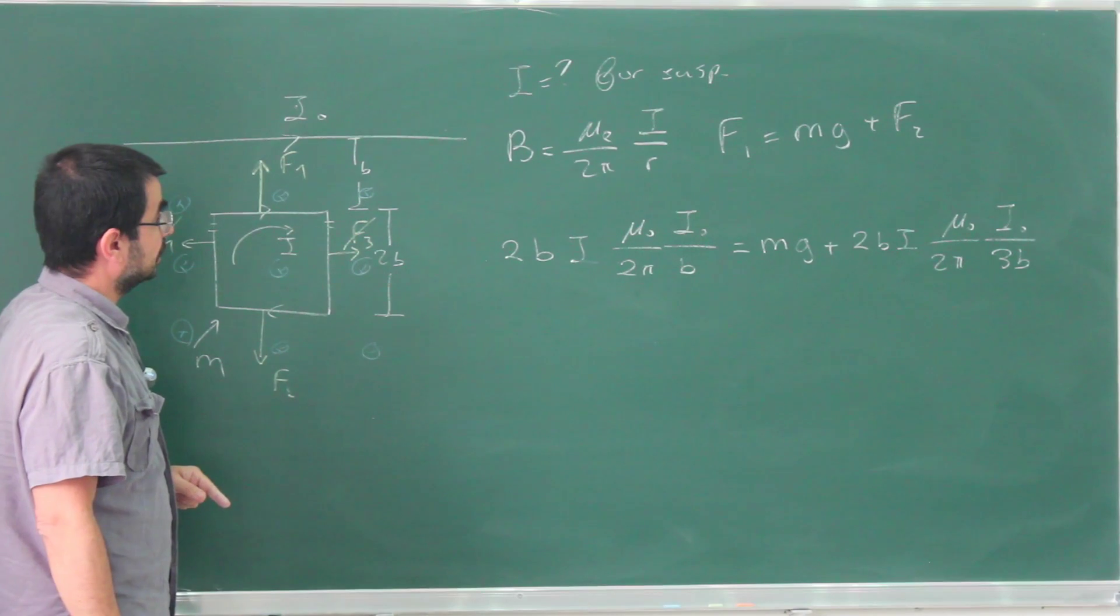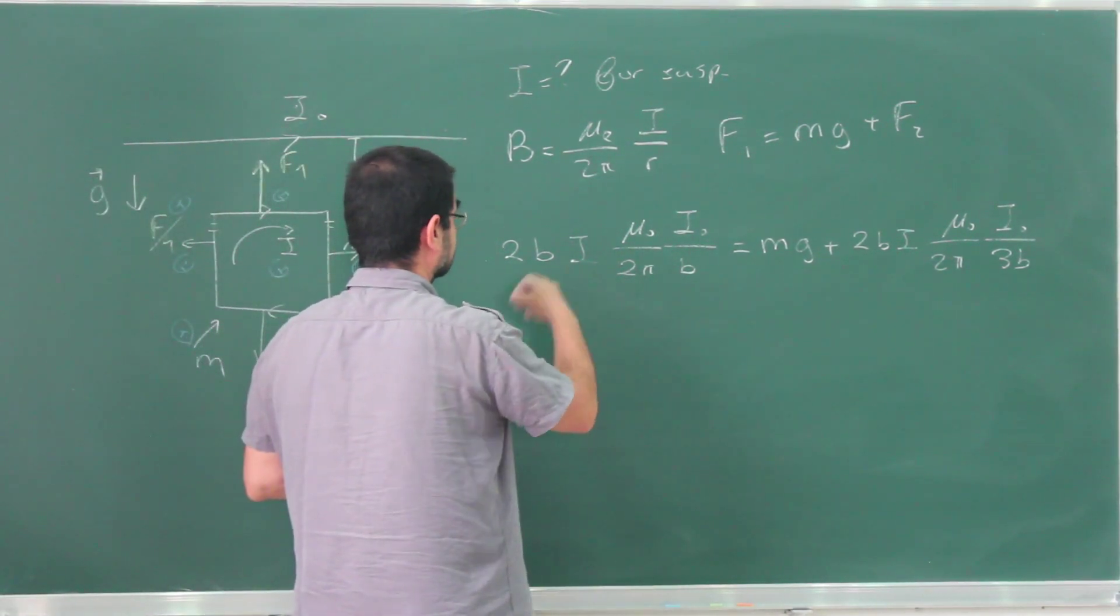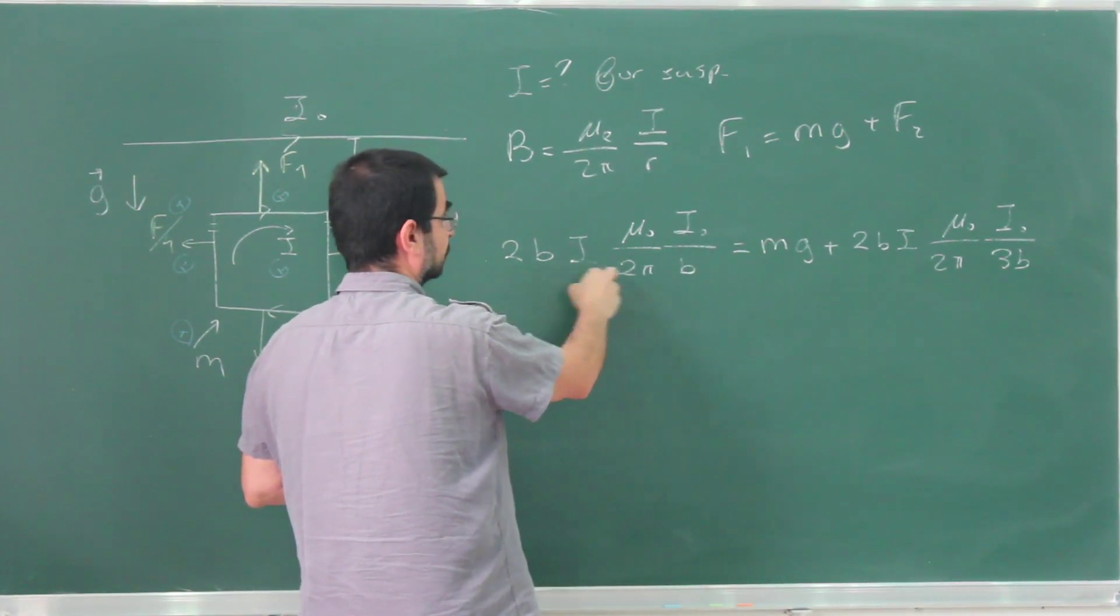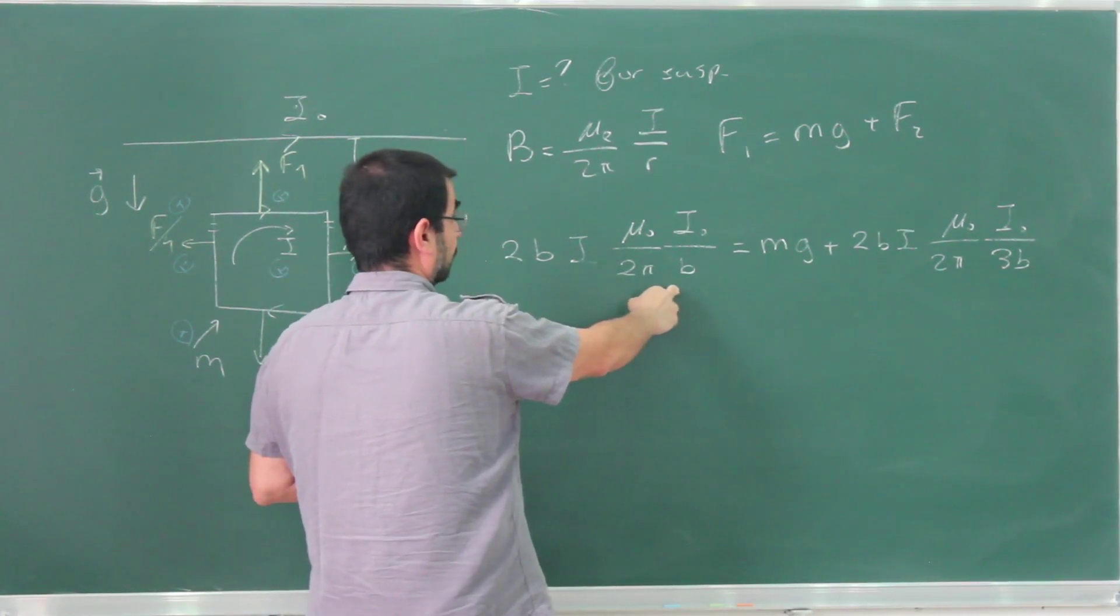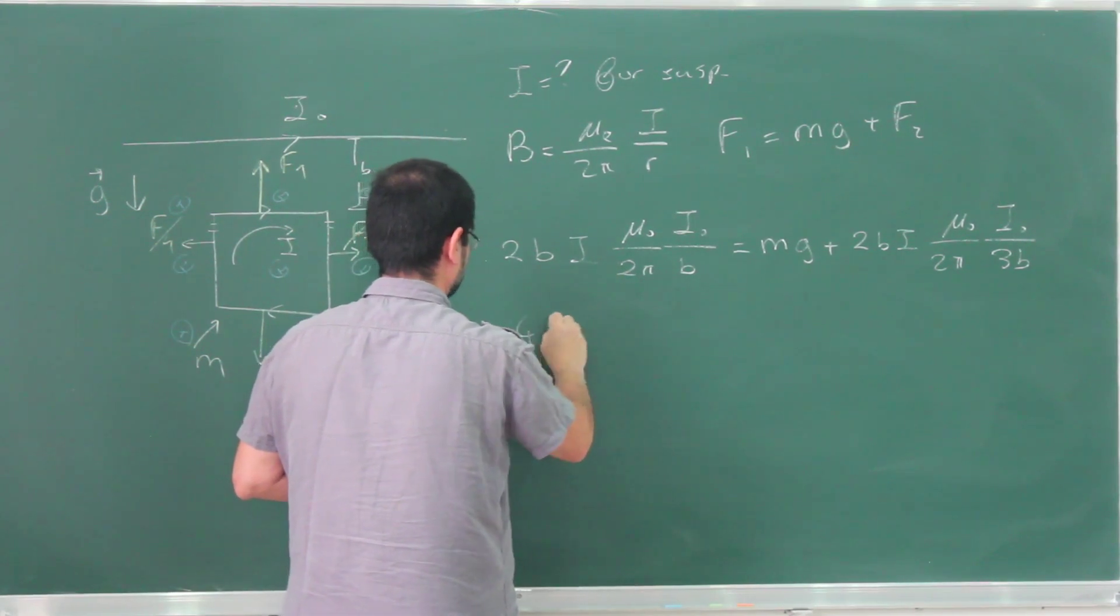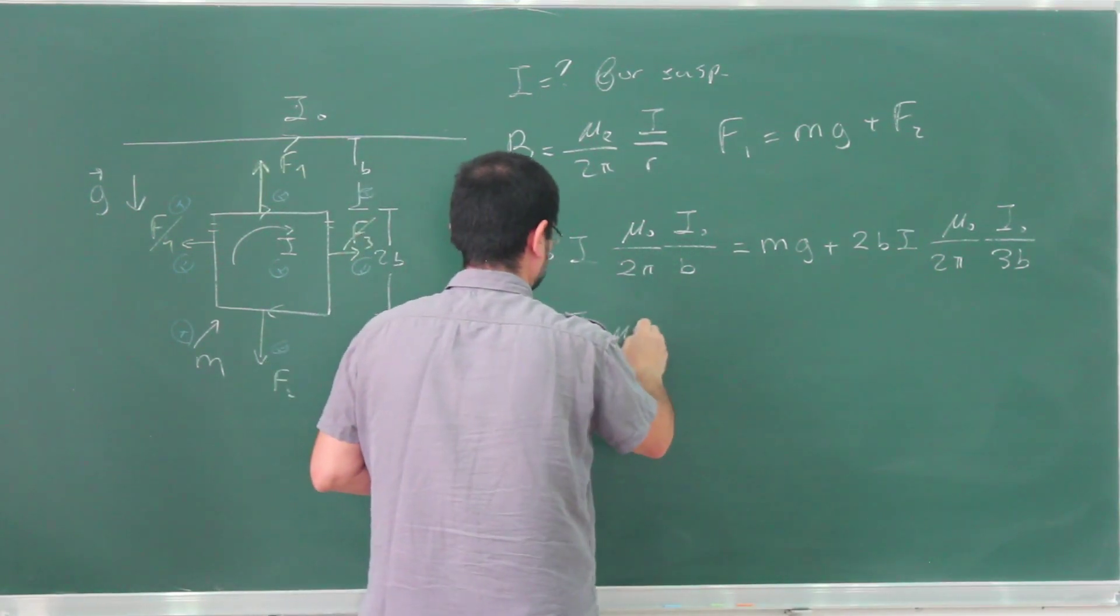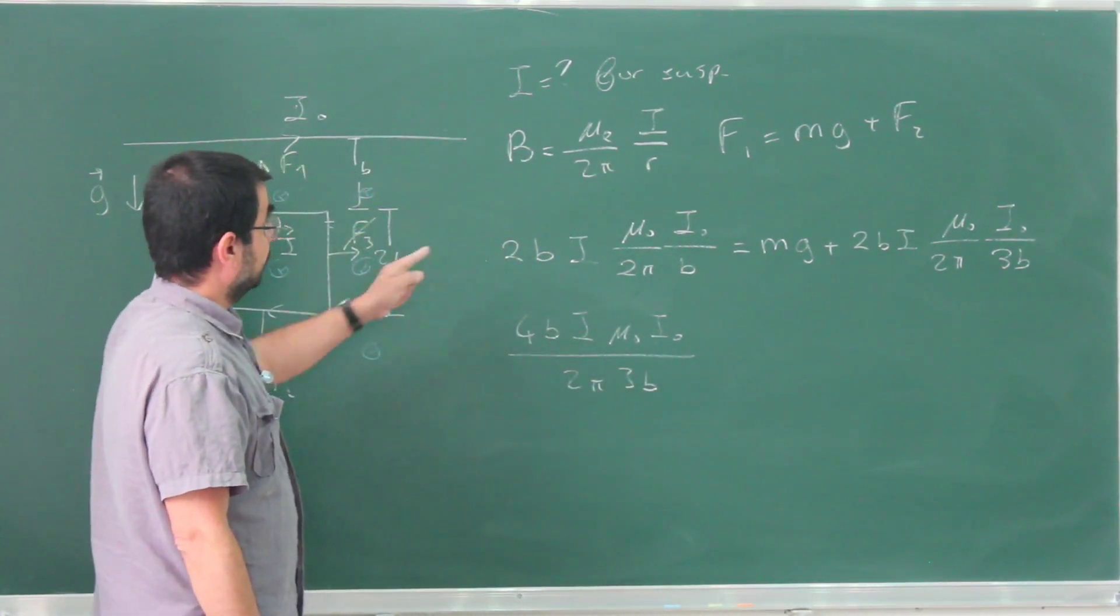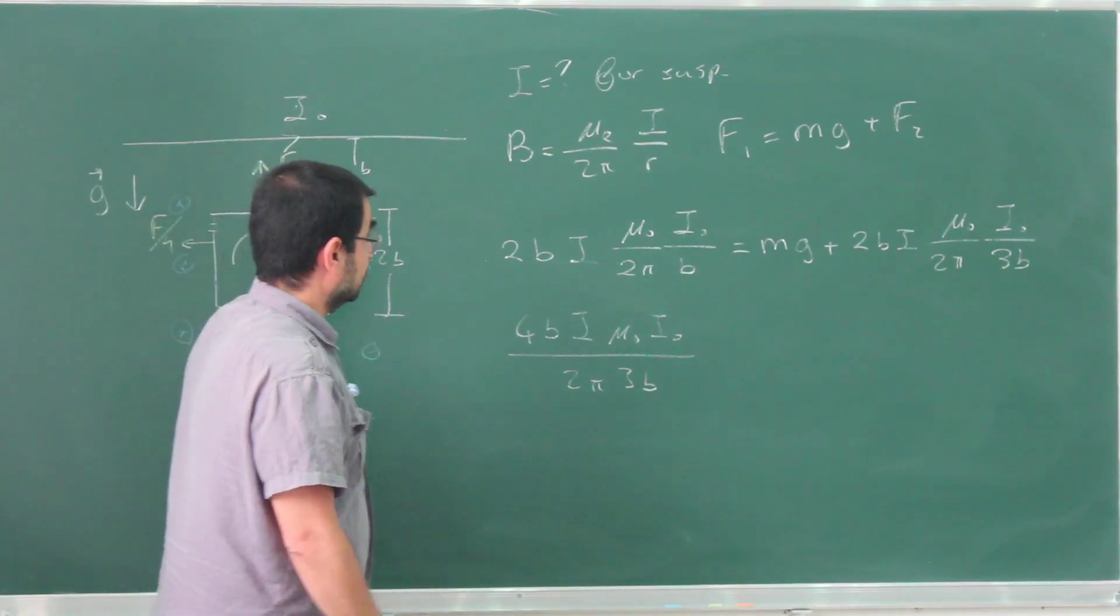And these are supposedly equal to each other. I can move this to the other side, I make the subtraction, so this becomes 6 over 3b. I'll just multiply this by 2, so it is 4b times I times μ₀ I₀ over 2π times 3b. If I multiply this by 3 and then take off 2, yeah, this is I think correct, is equal to mg.